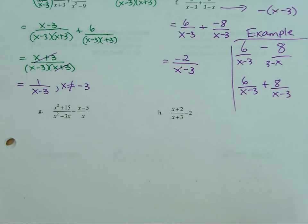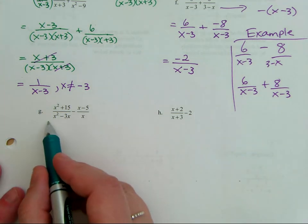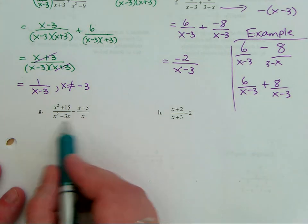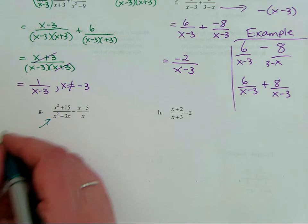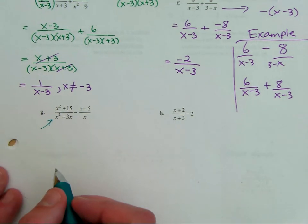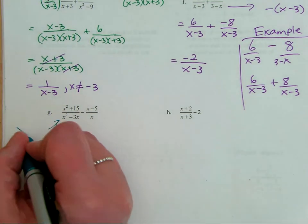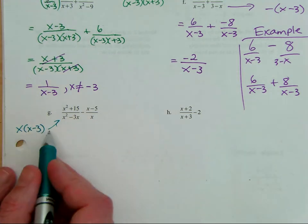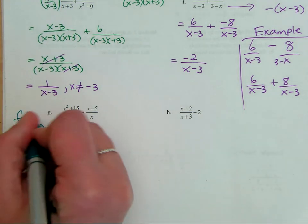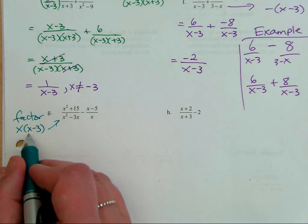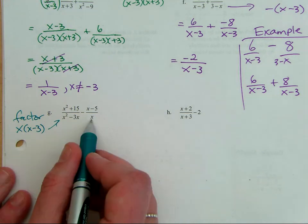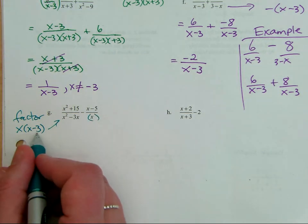Let's go ahead and look at problem G. What do we do first? We find the LCD. If you factor this denominator, you get X times X minus three. Notice that one is factored, so that's actually the LCD because you see how it includes the X and it includes the X minus three.